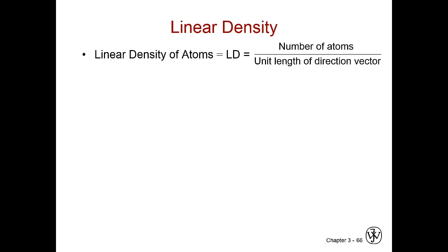We've discussed our directions — for example, a [1,0,2] direction or a [1,2-bar,1] direction. So how many atoms do we pass through when we go along this unit length? We're not talking about how many atoms we touch, but how many we directly go through by radius. If you count the specific radii that we go through and divide by 2, that's the number of atoms, because the radius is only half the distance through an atom.